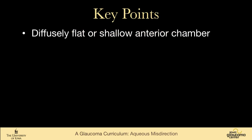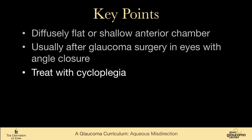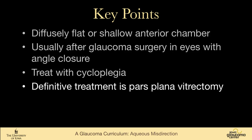The key points: diffusely flat or shallow anterior chamber, usually after glaucoma surgery in eyes with angle closure. You treat these patients with cycloplegia, but the definitive therapy is a pars plana vitrectomy, connecting the posterior and anterior chambers together through the compacted hyaloid face.